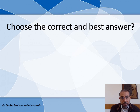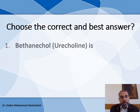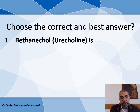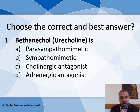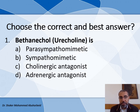The first question: Pilocarpine, its generic name Tritonium Euryculine. The choices are: A) Parasympathomimetic, B) Sympathomimetic, C) Cholinergic antagonist, and D) Adrenergic antagonist. As we know, Pilocarpine mimics the action of acetylcholine, so the answer is A, Parasympathomimetic.